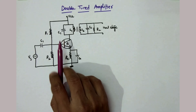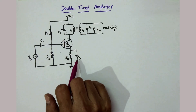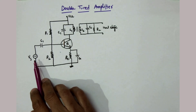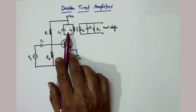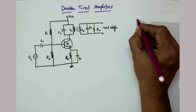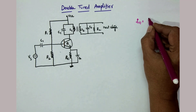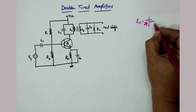When you consider the operation of the circuit, R1, R2, RE, and CE are the elements used for biasing purpose. Whenever the applied signal frequency is equal to the resonant frequency of the first tuned circuit, the resonant frequency FR1 is equal to 1 by 2π√(L1C1).